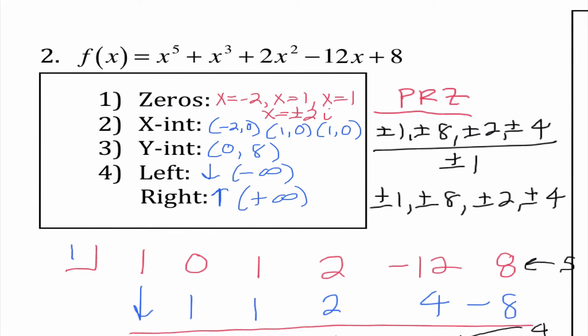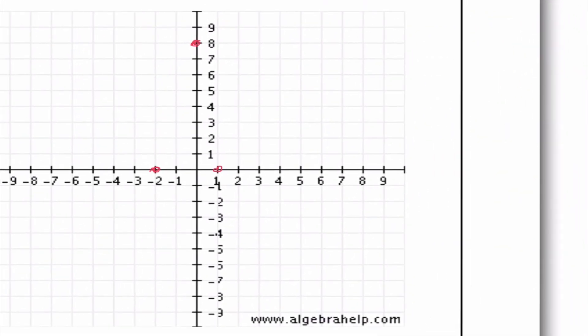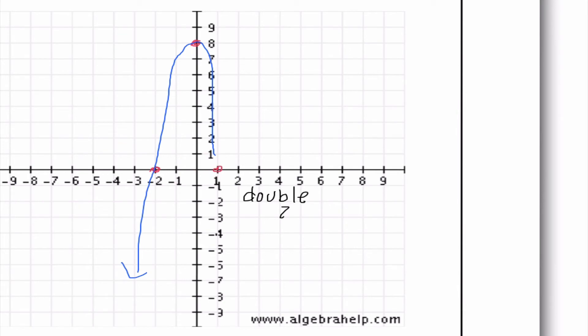Another thing we'll notice is graphing these kind of makes common sense with the direction, because I don't foresee myself being able to plot these three points and not have it go down — it needs to somehow connect from here to here, and the only way I foresee that happening is going down here. We said something special about 1: it was a double zero. So what's going to happen here is it's going to bounce off of the x-axis, and the only time that happens is when we have a double zero.